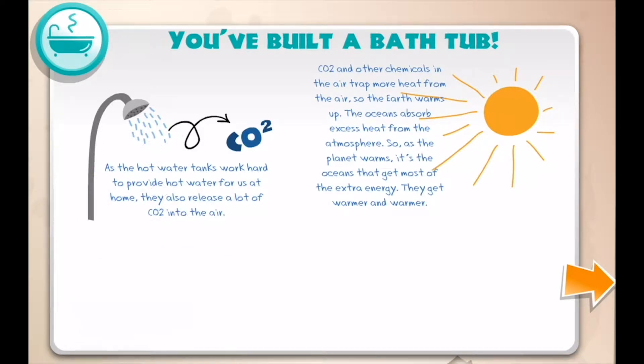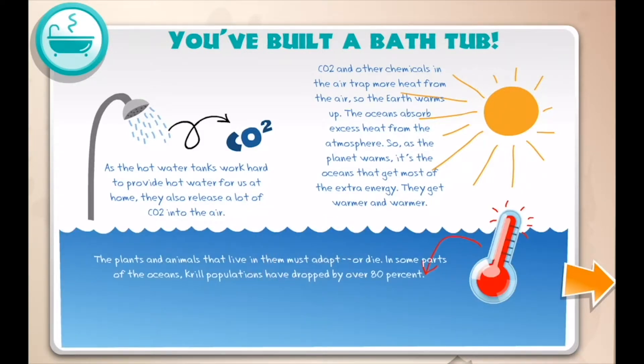The ocean absorbs excess heat from the atmosphere, so as the planet warms, it's the oceans that get most of the extra energy. They get warmer and warmer. The plants and animals that live in them must adapt or die.